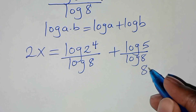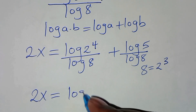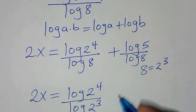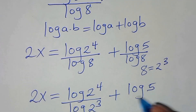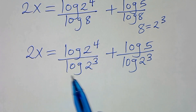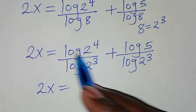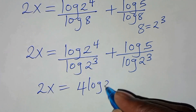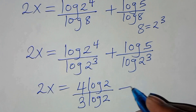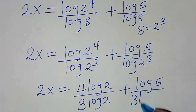The next step: we can express 8 as 2 to the power 3. So here we have 2x equal to ln(2 to the power 4) divided by ln(2 to the power 3), plus ln(5) divided by ln(2 to the power 3). Applying the power rule, ln(2 to the power 4) becomes 4·ln(2) divided by 3·ln(2), plus ln(5) divided by 3·ln(2).